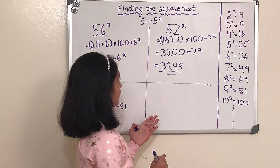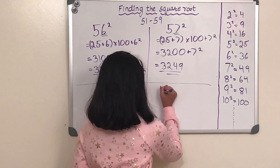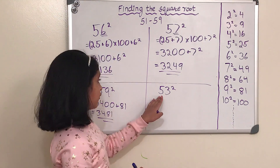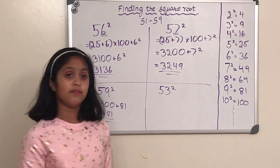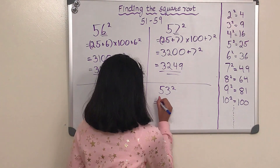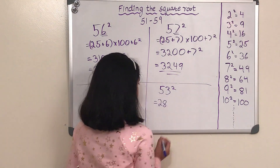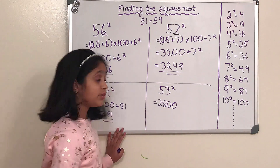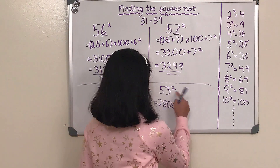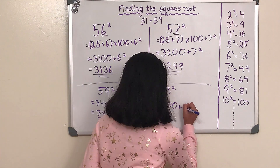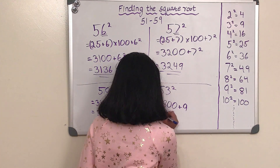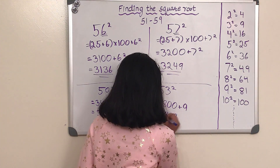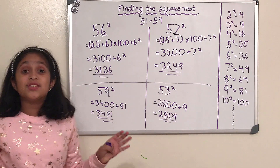Our next one is 53 squared. Let's first do 5 squared, which equals 25, plus the 3, which is 28. Then times that by 100, which is 2800. And then we add 3 squared: 3 times 3 is 9. So our answer is 2809.